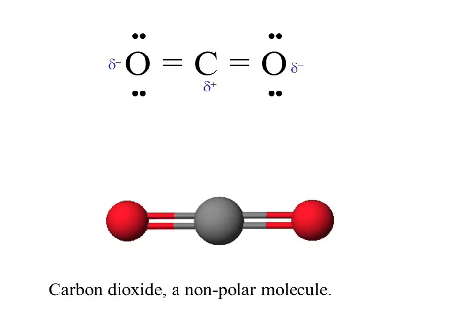If you look at the electronegativity of carbon, it's less than the electronegativity of oxygen. Thus, there's a partial positive on the carbon and a partial negative on the oxygens. Spatially, if you have negative, negative, and positive, the center of positiveness is the carbon atom, and the center of negativeness between the two oxygens is also on the carbon. That's why CO2 is nonpolar.